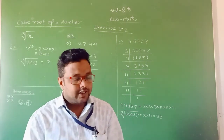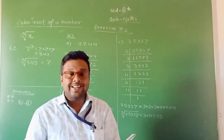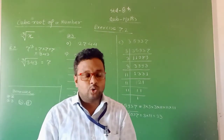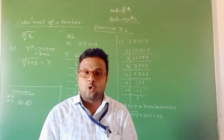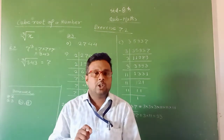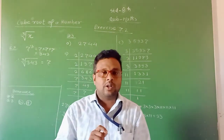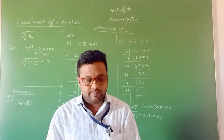Statement C: Square of a number is positive, so the cube of that number will also be positive. This is false. The square of any number is positive only, but the cube of a negative integer or negative number is negative. Therefore, this statement is false.